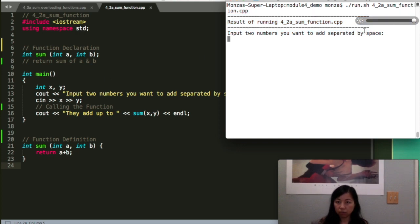So the program starts from under this line. And for all the demos, it probably will stay this way. So input two numbers you want to add separated by space. Let's say three or four and four. So they add up to seven.